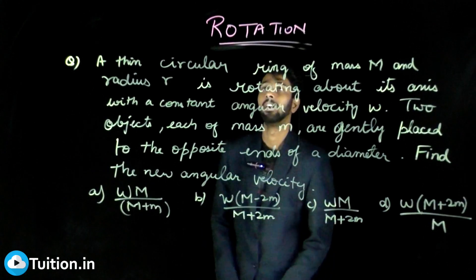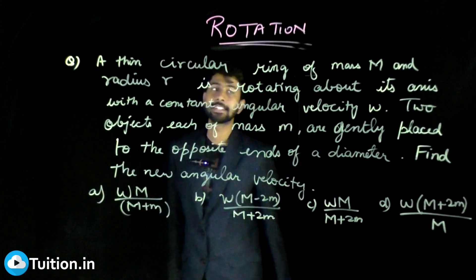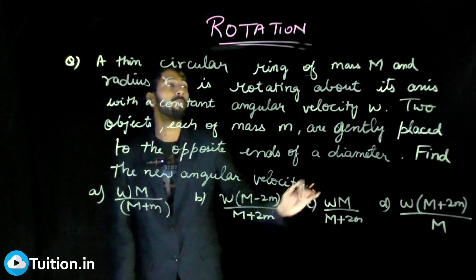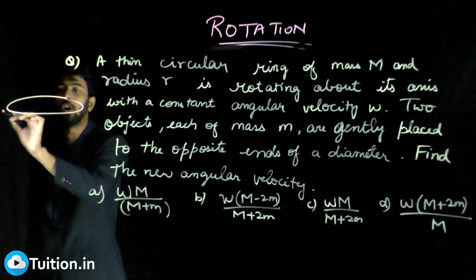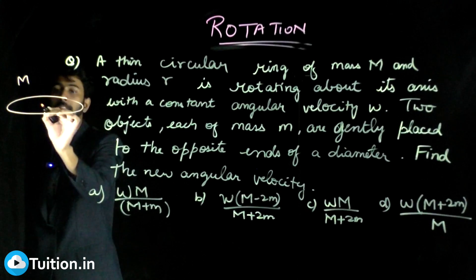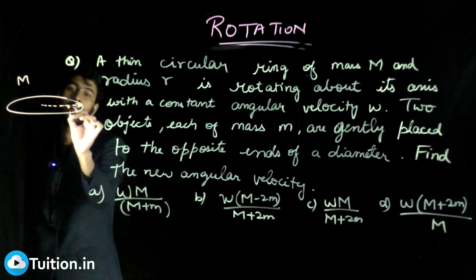So let us look at this previous problem from rotation again. It says a thin circular ring of mass M and radius r. So you have a thin circular ring of mass M and radius r.